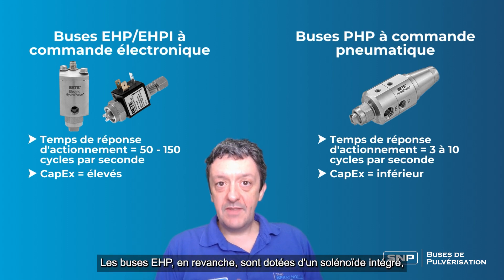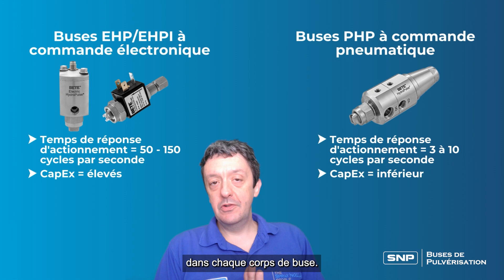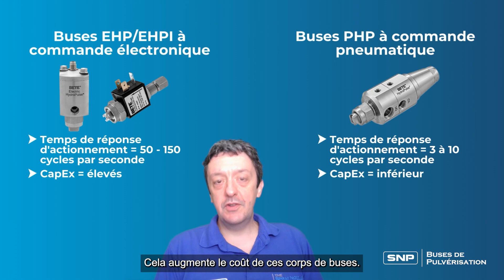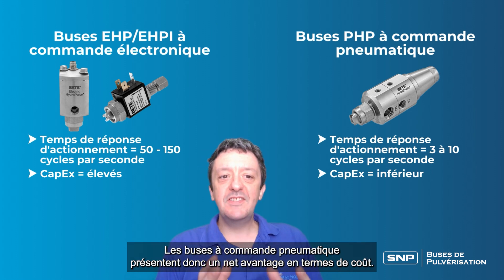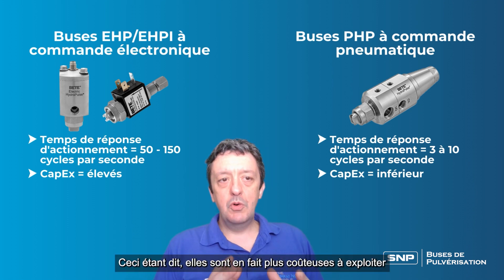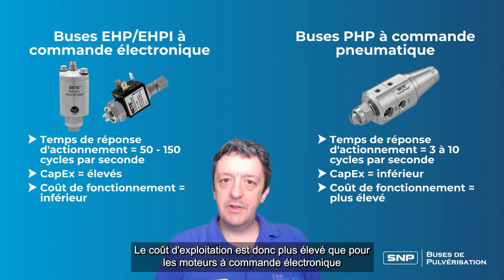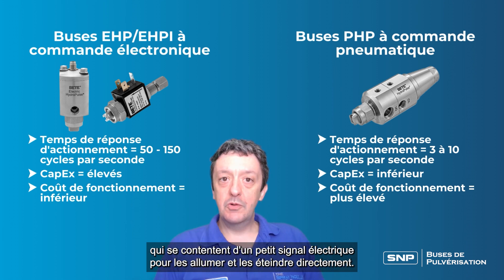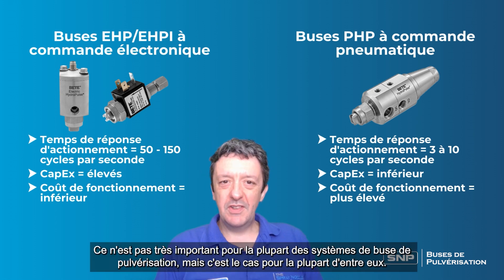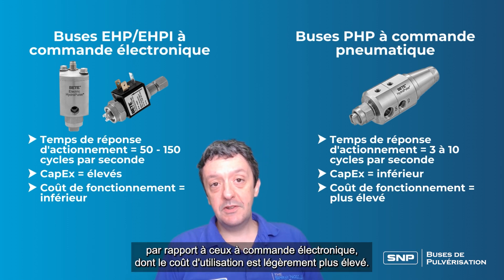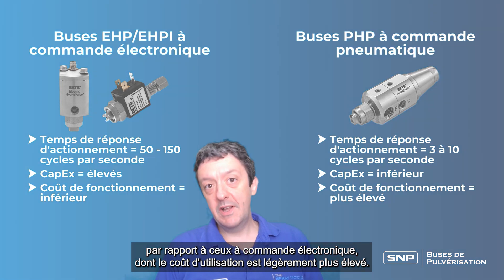The EHP nozzles, in contrast, have their own integrated solenoid in each of the nozzle bodies, so you've basically got one rapid-response valve per nozzle, which takes the cost of those nozzle bodies up. There is a distinct cost advantage with the air actuated nozzles. That being said, they are actually more expensive to run because you're using compressed air, so there's a higher running cost compared to the electronic nozzles, which just take a small electrical signal. So much lower CAPEX for the PHP air actuated nozzles, but a slightly higher running cost.